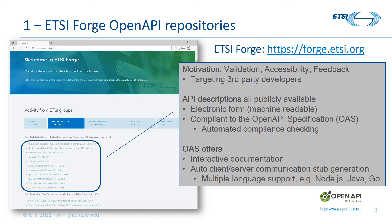The result is that the ISG provides OpenAPI specification compliant API description files for each of its service APIs, with each inherently including the API's information model. The resulting increased accessibility of the ISG's specifications has already led to feedback from outside the ISG that has been used to further enhance the ISG specifications and associated APIs.